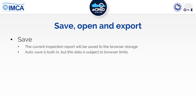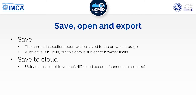The default save option uses your browser storage, which may be limited. Other options help create a backup and enable you to switch devices — perhaps take a tablet on the vessel, then complete the report on your PC. Save to Cloud will store your draft on our servers. Please note this is just a snapshot, so if you make changes to the report, you'll need to re-upload to update the cloud version. An internet connection is obviously required for this.